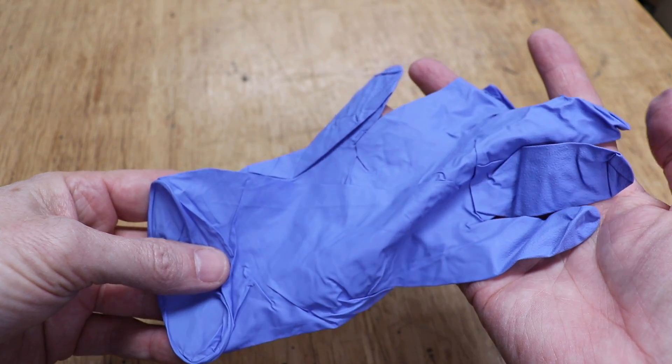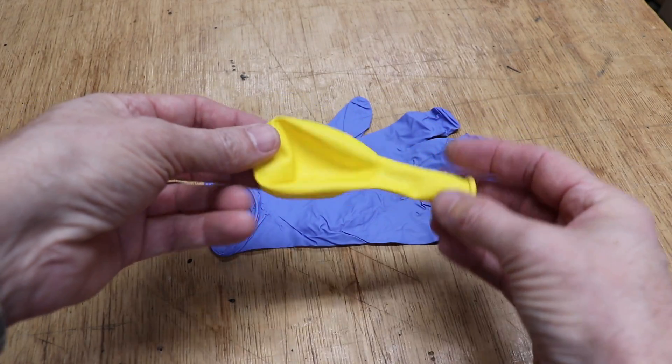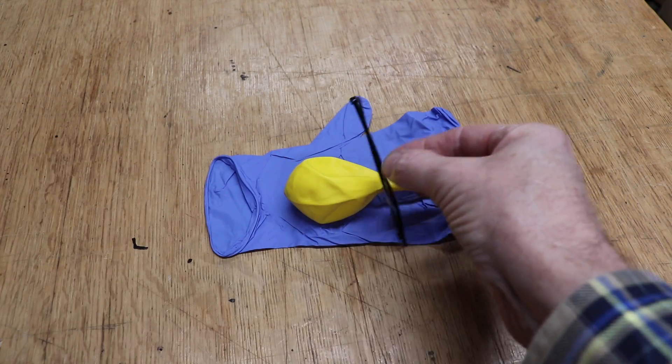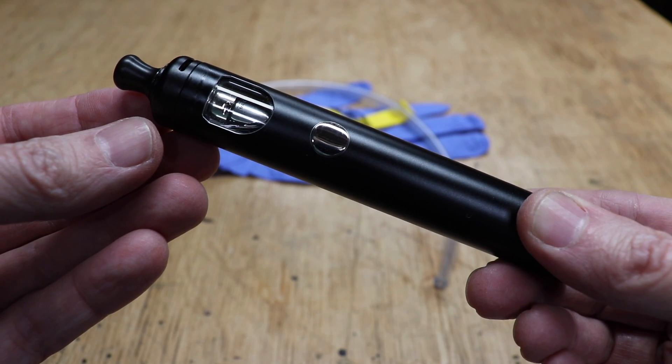There's only a few things you're going to need to make this. The first thing is a regular nitrile work glove, a balloon from the dollar store, a couple of small zip ties, a piece of vinyl tubing, and any vape pen that uses plain, ordinary, safe vape juice.